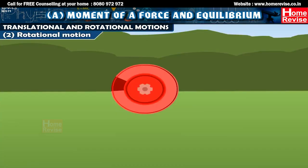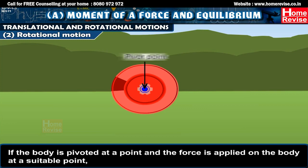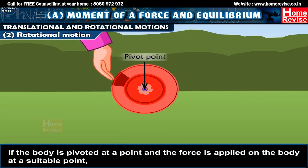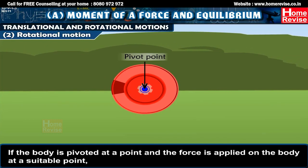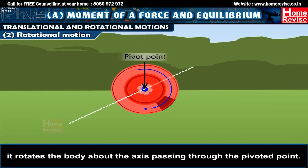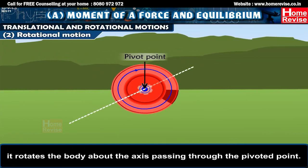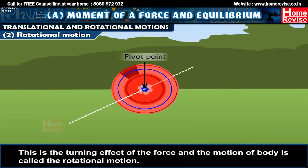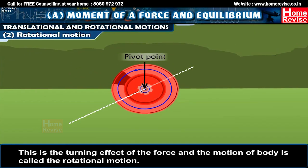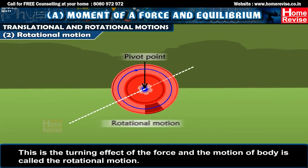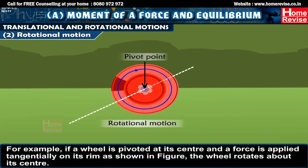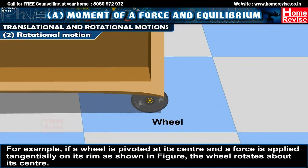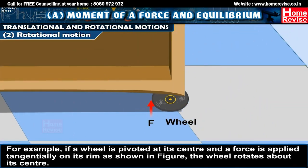Rotational motion: If the body is pivoted at a point and the force is applied on the body at a suitable point, it rotates the body about the axis passing through the pivoted point. This is the turning effect of the force and the motion of the body is called the rotational motion. For example, if a wheel is pivoted at its centre and a force is applied tangentially on its rim as shown in the figure, the wheel rotates about its centre.